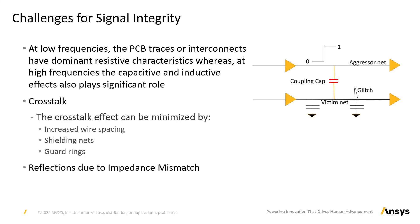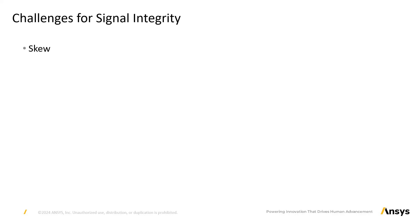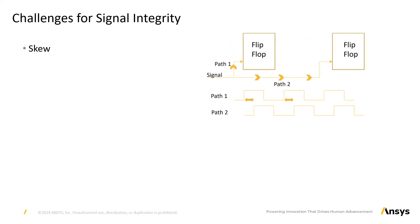Reflection due to impedance mismatch: changes in impedance, such as at discontinuities or the end of wire traces, can cause reflections. The reflected signals interfere with the original signals, causing distortions. Attenuation: this is the decreasing signal amplitude as it travels along a trace, distorting the signal waveform. Skew: this is the timing mismatch between signals that are supposed to be simultaneous, which can cause timing errors such as signal sampling errors due to a mismatch in clock.